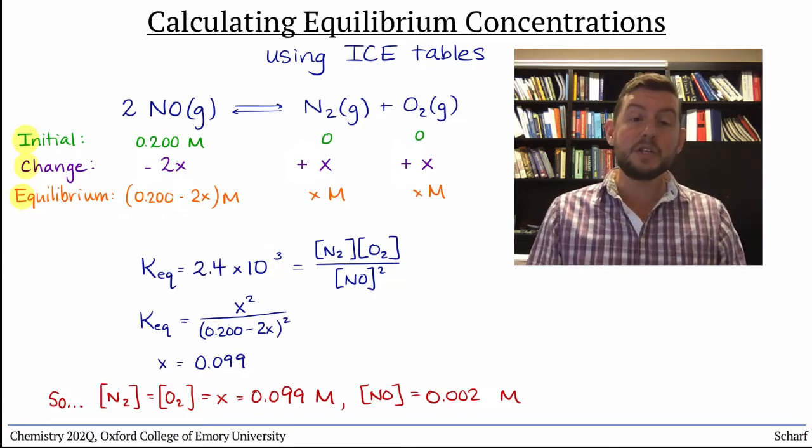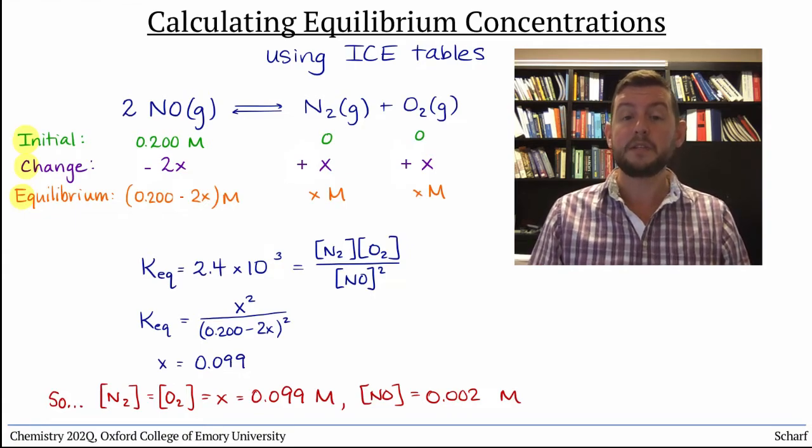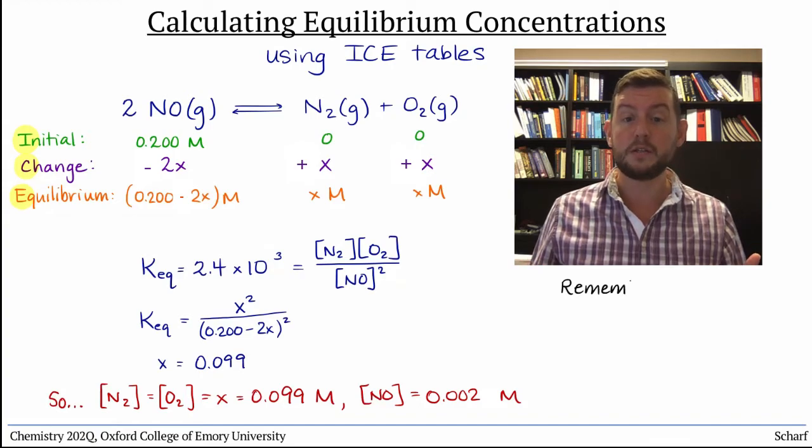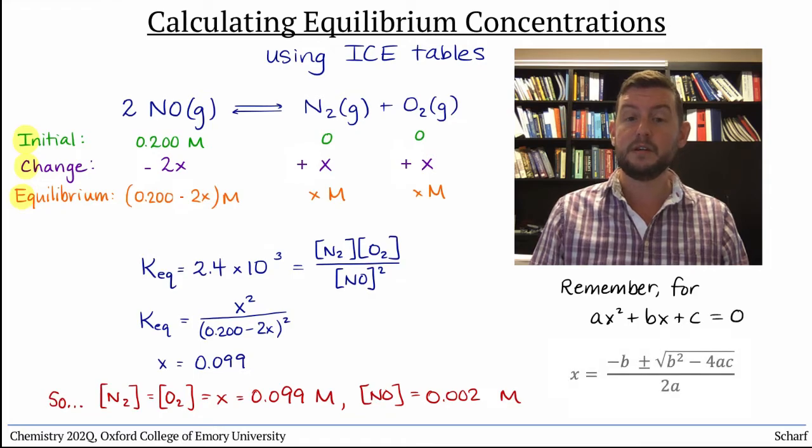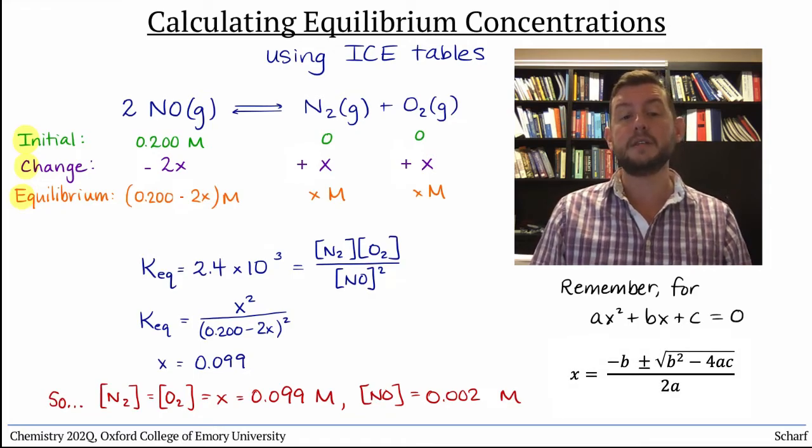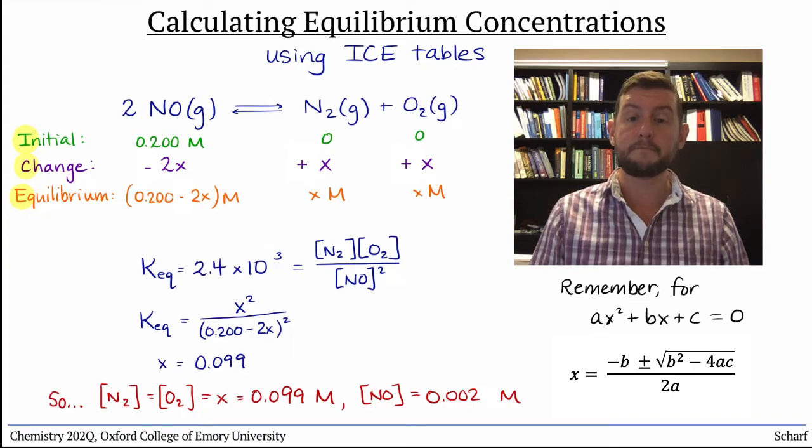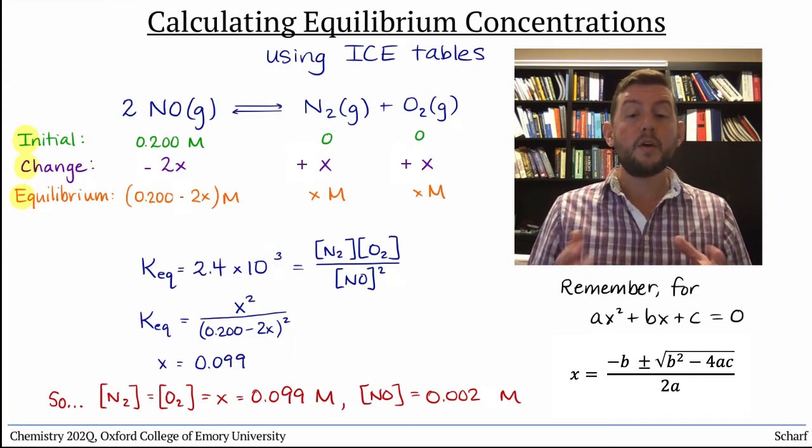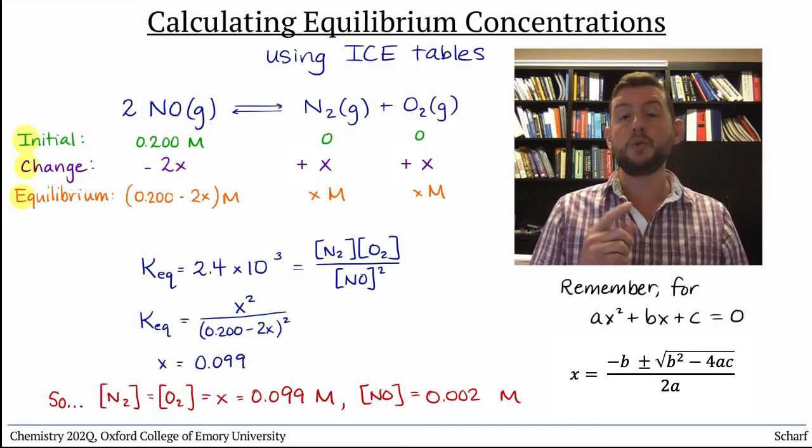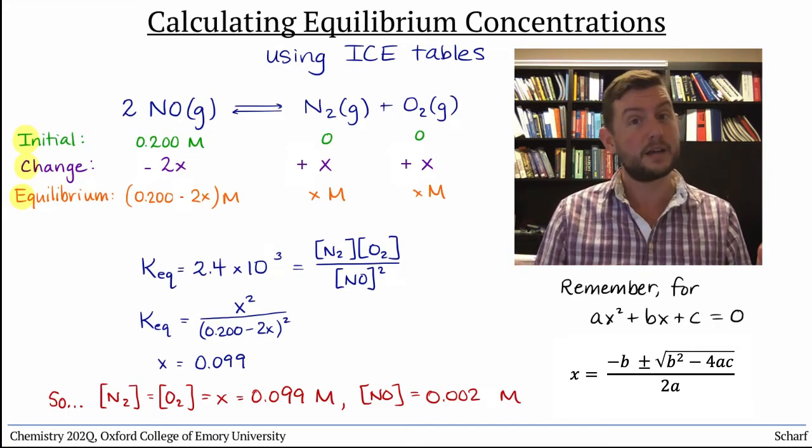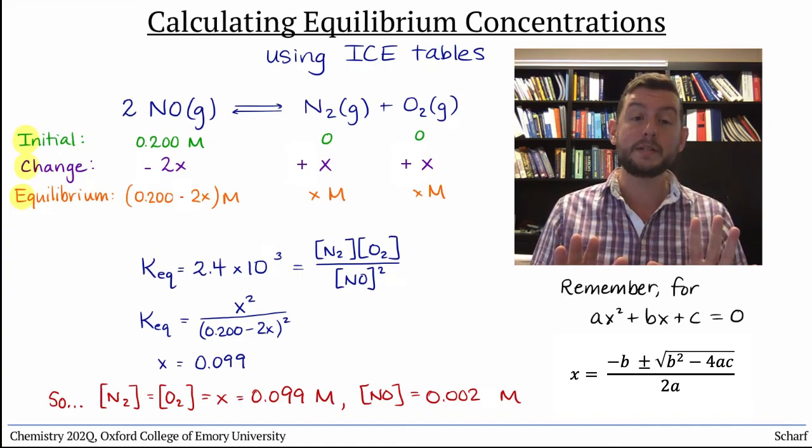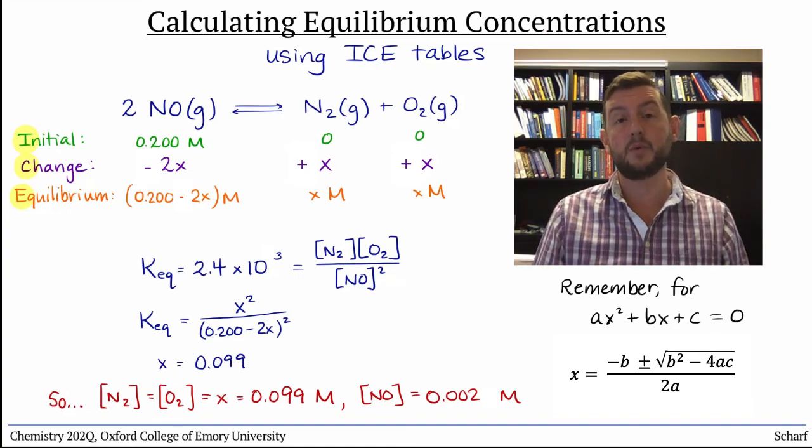Sometimes the use of ICE tables involves some algebra that's a little trickier than this specific example. You may run into, for instance, quadratic equations of the form ax squared plus bx plus c equals 0, and you should be able to solve these equations by using the quadratic formula. Though the quadratic formula produces two solutions, only one solution will ever make physical sense. That's obviously the one to use. I promise that I won't make you solve anything more difficult than that.